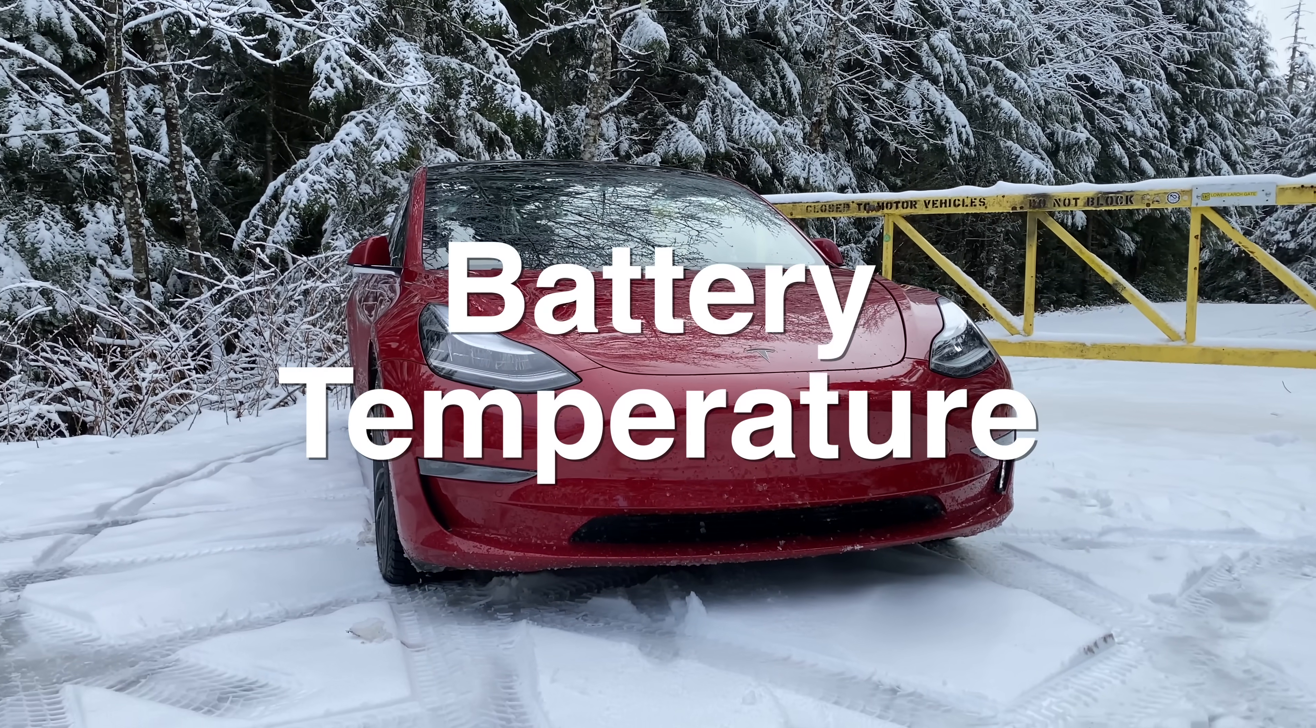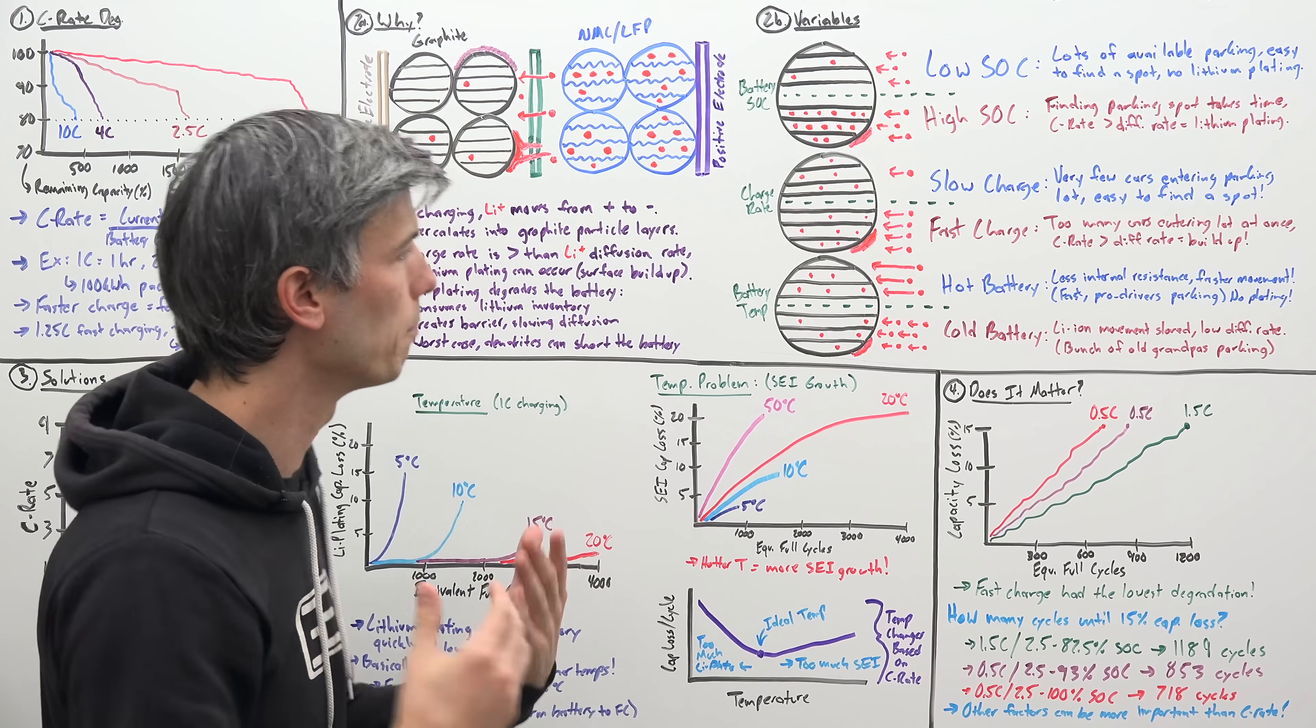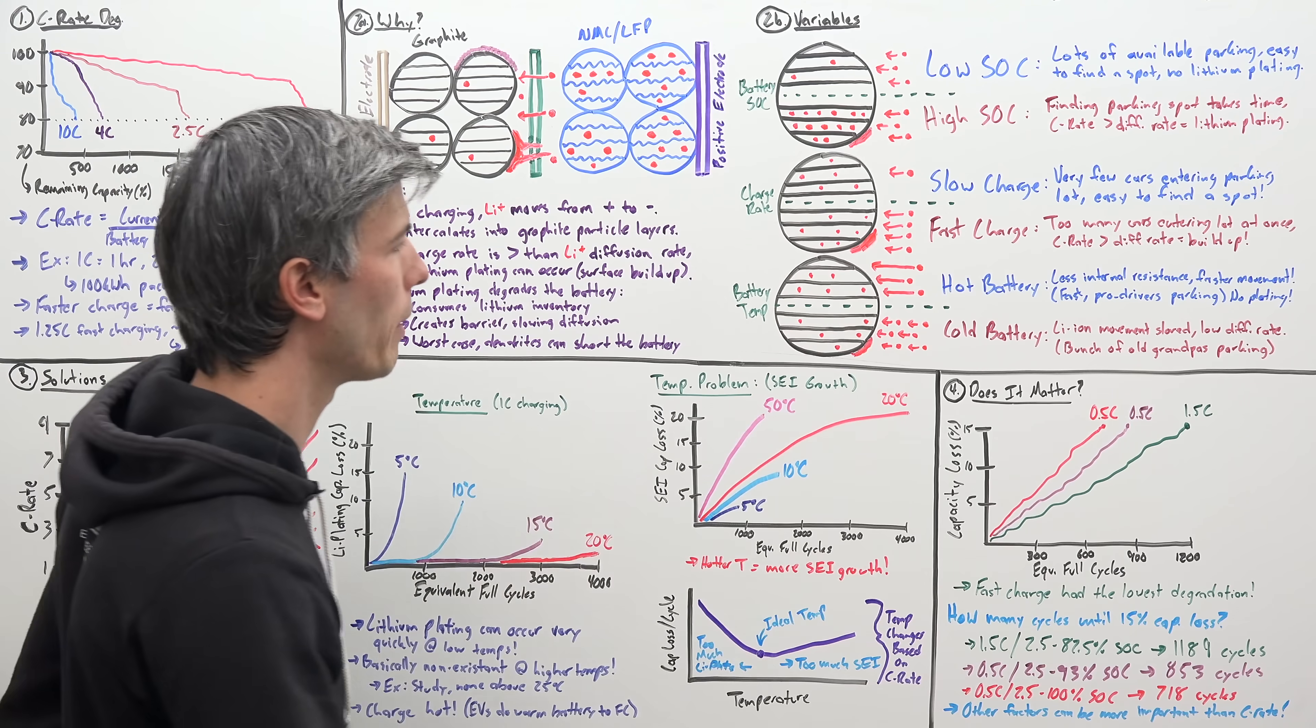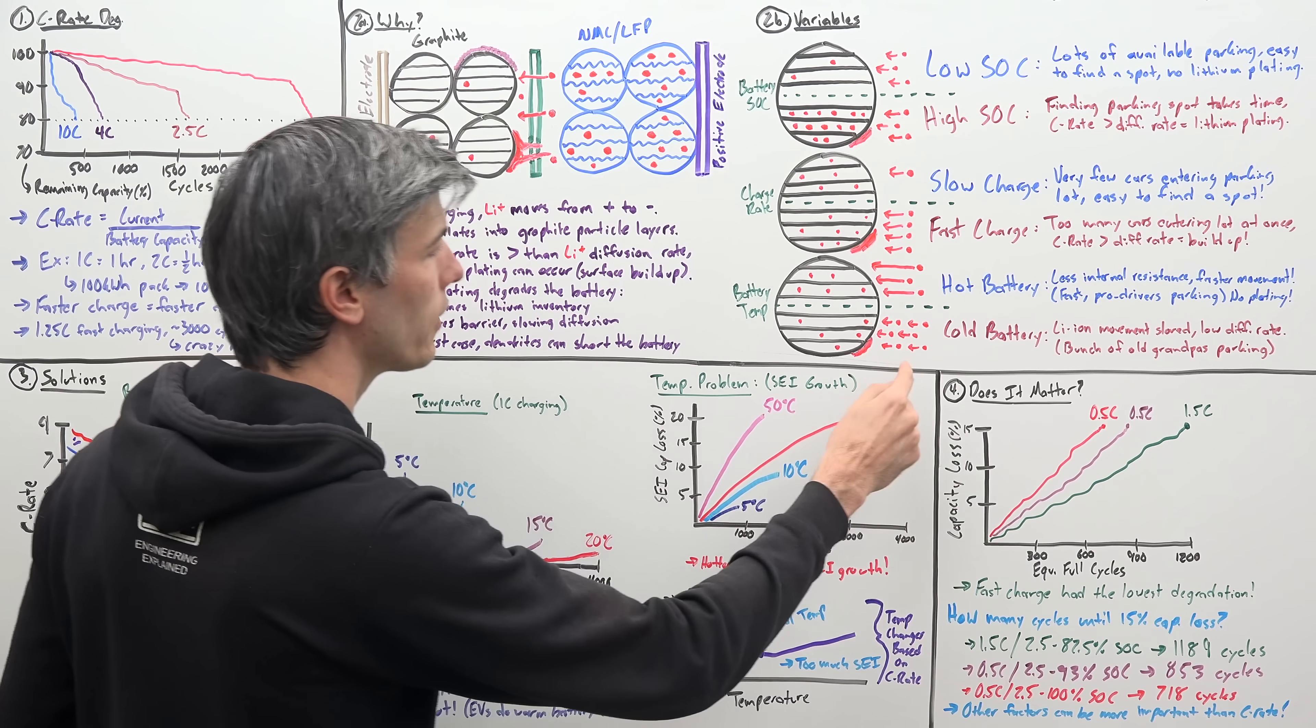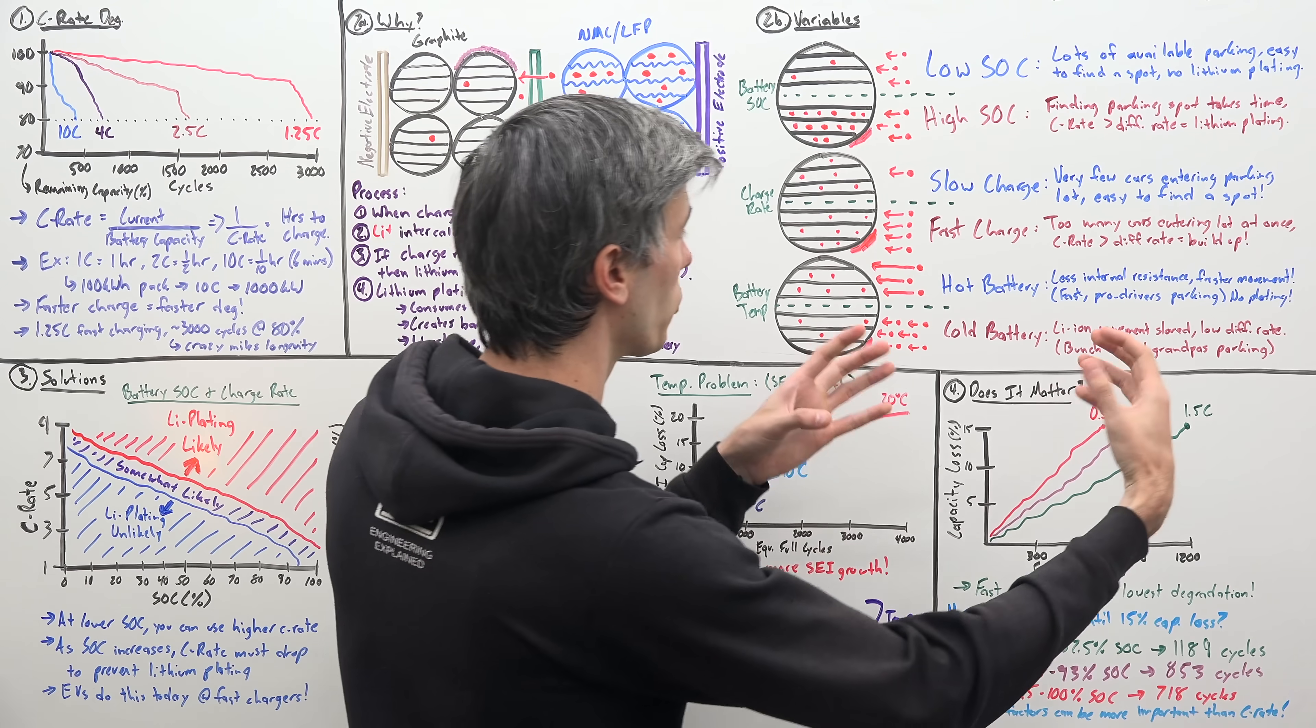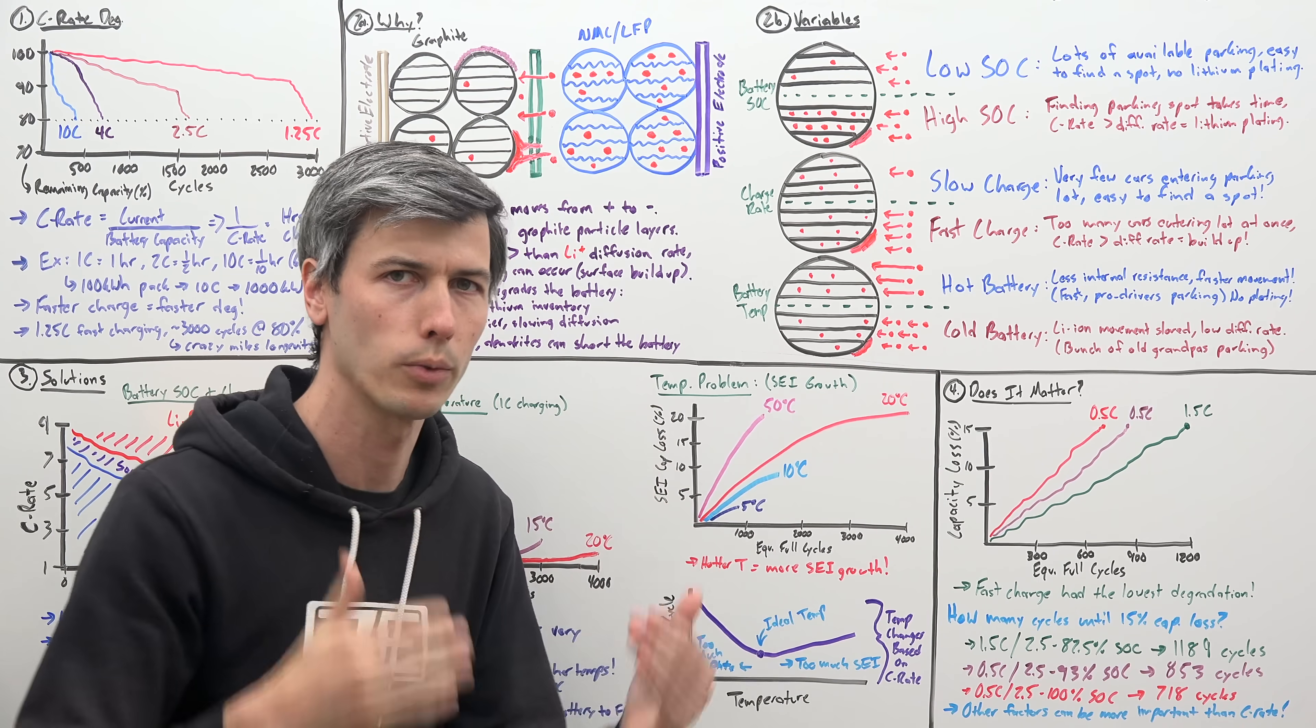And finally let's look at battery temperatures. So if you have a hotter battery, well there's less internal resistance. So these lithium ions are moving around within that battery much faster. It's like having a bunch of pro drivers that are driving really fast, and they find those parking spots very quickly. Versus a cold battery, all of these lithium ions are now moving much slower through the battery. So it takes them more time to find that parking spot. If you've got a bunch of old grandpas driving cars into the parking lot, they're not going to find a spot as quickly. So if it's really cold, those lithium ions start to build up on the outside of the particle, rather than finding that parking spot if your charge rate is too high.